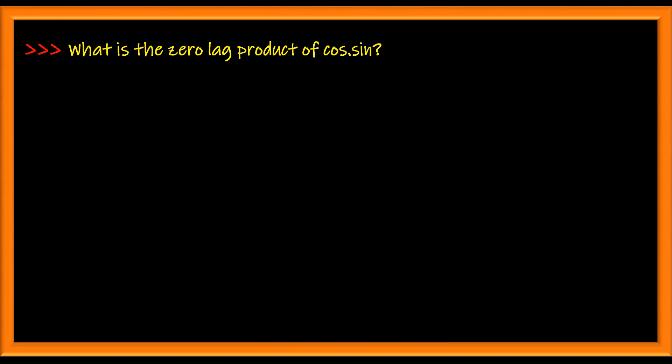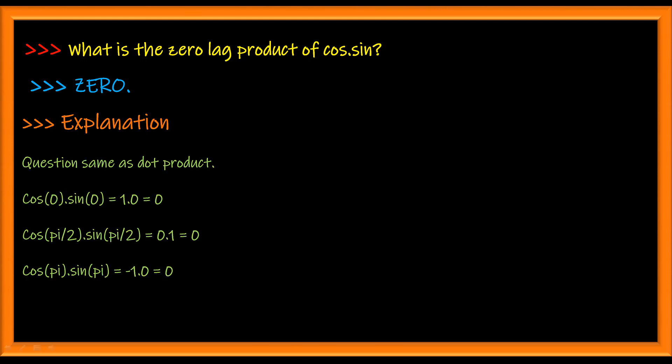What is the zero-lag product of cosine and sine? Zero. The zero-lag product is the same as a dot product, which in the case of cosine and sine will always be zero, as they are orthogonal to one another.